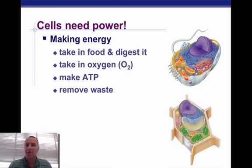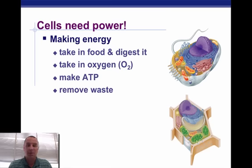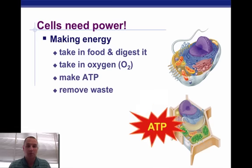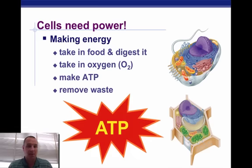They do this by taking in food and digesting it oftentimes. They also have to have the oxygen present. They want to make ATP to remove waste, but the whole purpose of mitochondria or chloroplast, no matter if you're a plant or an animal, is to create ATP.